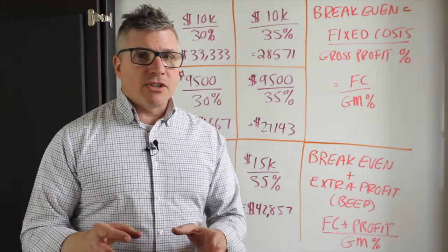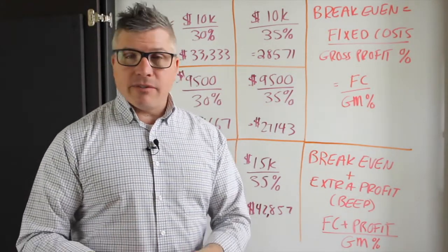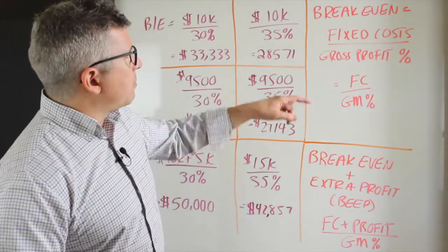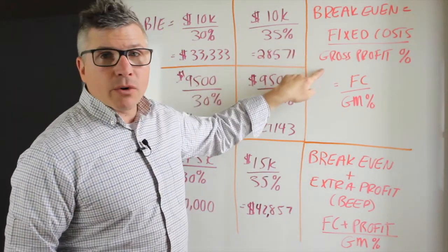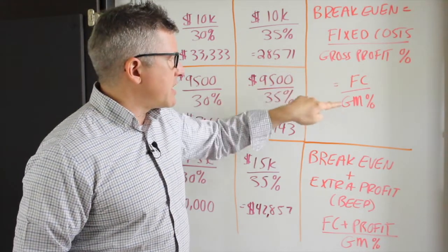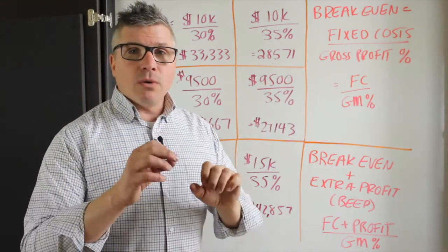So let's get into a couple of definitions. How do we actually calculate break-even if it's not your fixed costs? Your break-even is actually your fixed costs divided by your gross profit margin percentage. So FC over your gross profit margin.